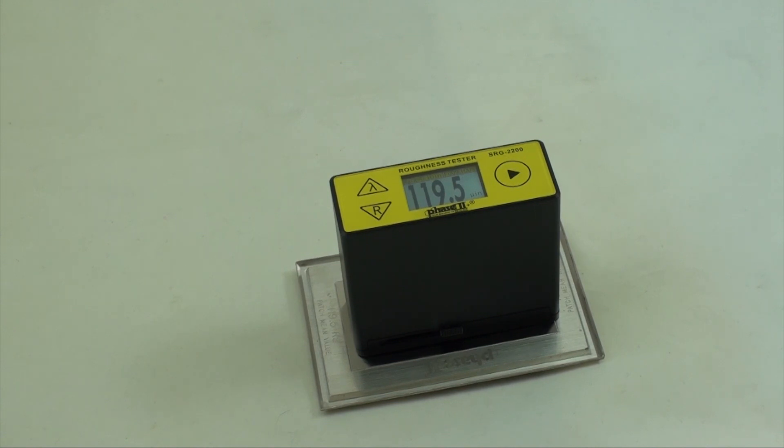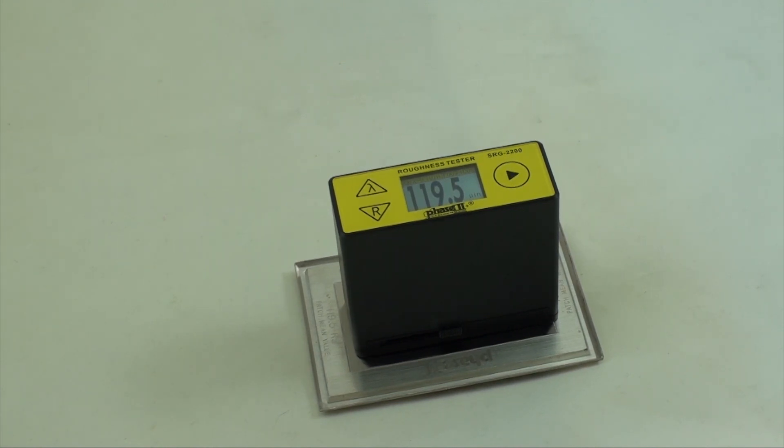When abnormal errors are found, the supplied reference standard should be used for calibration. The RA value of the supplied standard is 119.5 micro inches or 3.03 microns.